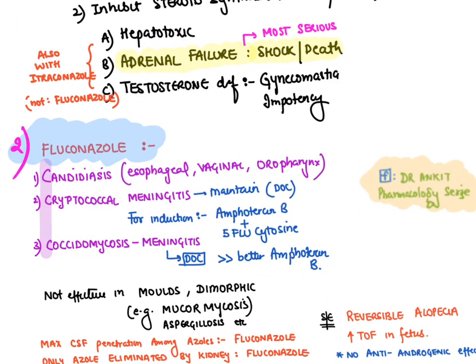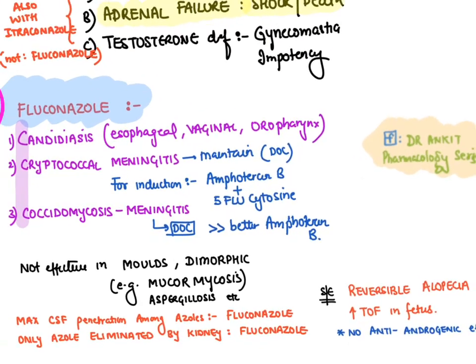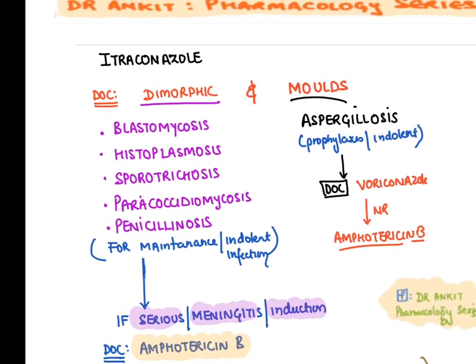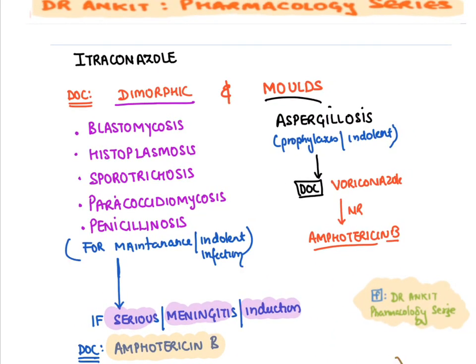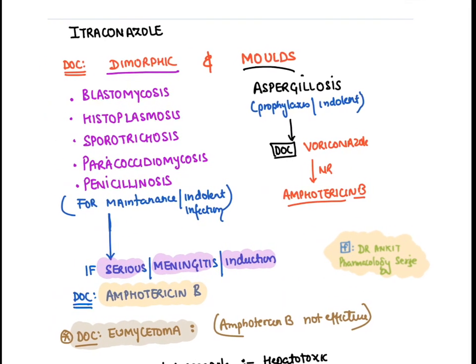Fluconazole is the drug of choice for all yeast-like fungi: Candida, cryptococcal meningitis, and coccidioidal meningitis. It is not effective for molds or dimorphic fungi. The drug of choice for dimorphic fungi (blastomycosis, histoplasmosis, sporotrichosis, paracoccidioidomycosis, penicillinosis) is itraconazole, which is also the drug of choice for mycetoma.